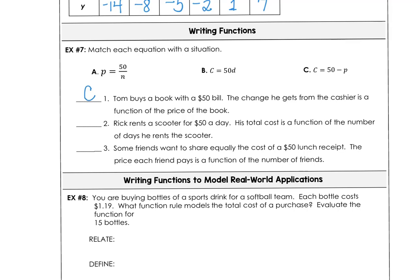For number 2, Rick rents a scooter for $50 a day and his total cost is a function of the number of days he rents the scooter. So that would be letter B. And then by default letter A is going to be some friends want to share equally the cost of a $50 lunch receipt. The price for each friend pays is a function of the number of friends. So we would take the $50 and divide by the number of friends to get the price that each person would pay.